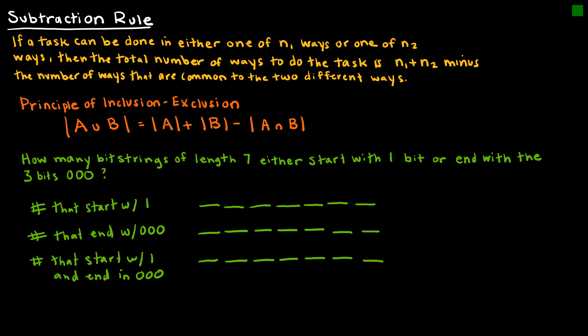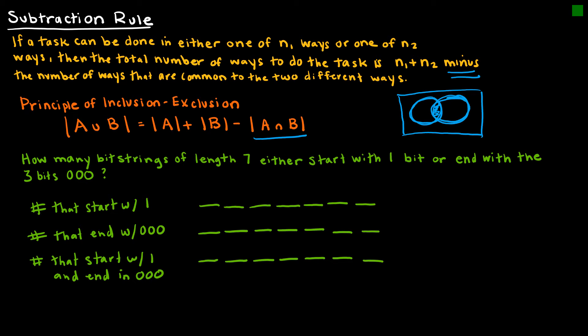Now we have the subtraction rule, which is quite often called the principle of inclusion-exclusion. The subtraction rule says if a task can be done in either N1 ways or N2 ways, then the total number of ways is N1 plus N2 minus the number of ways common to both. If there's an overlap where values are not disjoint, we have to subtract what's in the overlap because it was counted in both the first set and the second set.